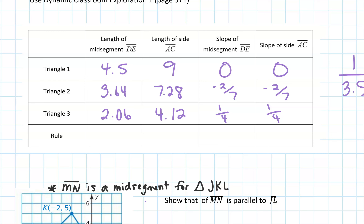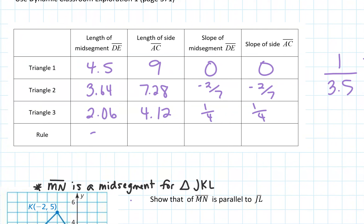So the rule is: if the mid-segment is x, then the length of the other side is 2x. And the slopes would be the same, which tells us the lines are parallel. What we just did is showing us what the mid-segment theorem says, which we're going to write out later in our notes. We started by defining what the mid-segment is — finding those midpoints and connecting them.